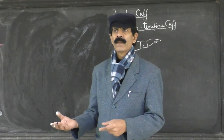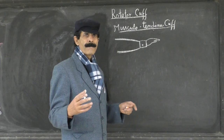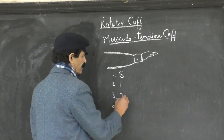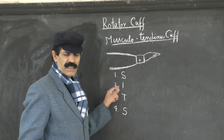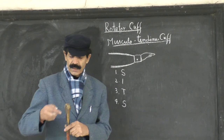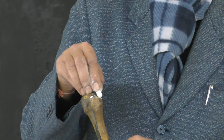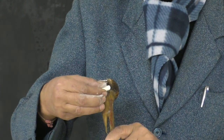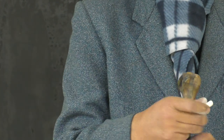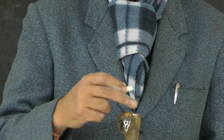As these muscles come near their insertion, they are very close together, whereas their origin is very wide. The rotator cuff is formed by four muscles, remembered by the mnemonic SITS. Three muscles are inserted on the greater tubercle: the topmost is S for Supraspinatus, then I for Infraspinatus, then T for Teres minor. Only one muscle, S for Subscapularis, is attached to the lesser tubercle.